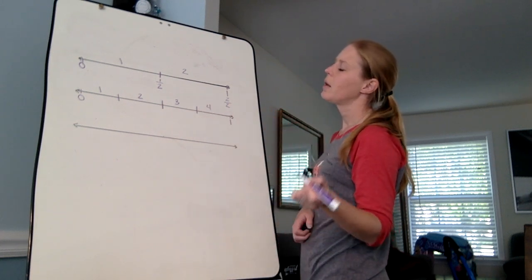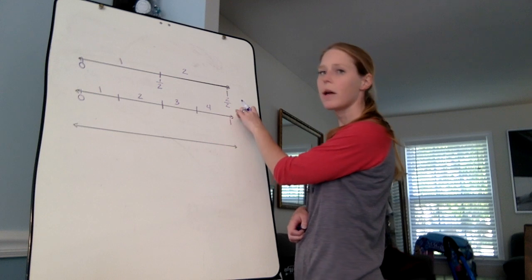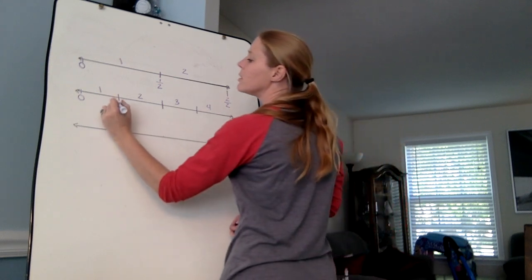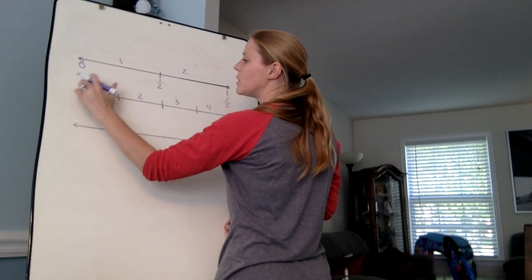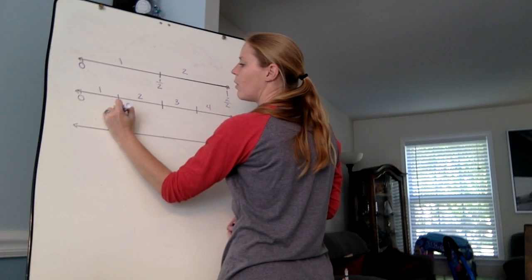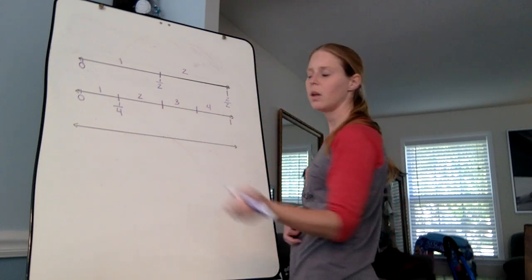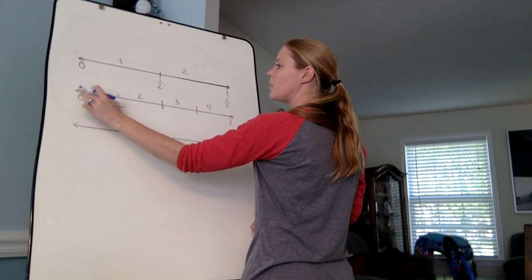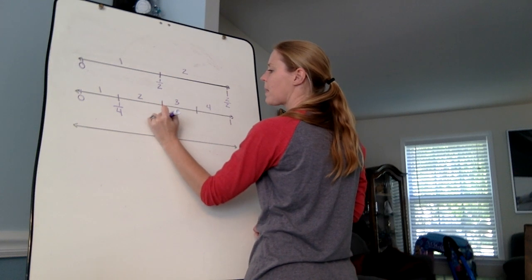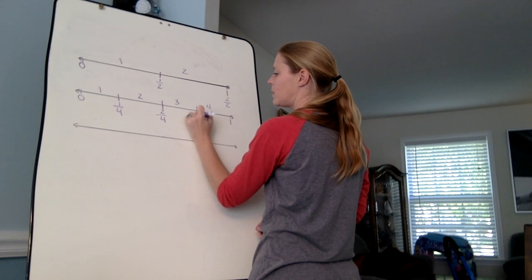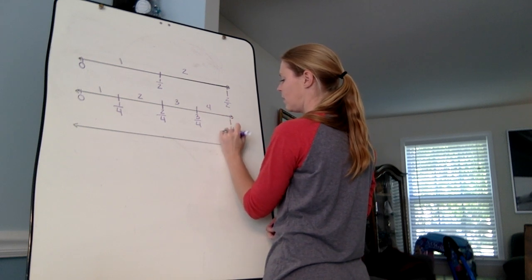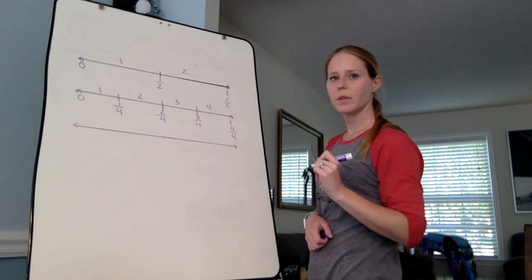And when I label them, now instead of having a two on the bottom as my denominator, I'm going to have a four on the bottom. So this first piece from the zero to this first line is going to be one fourth. My next jump from the zero is going to be one two, two fourths. Now we have three fourths, and then I can do four fourths.